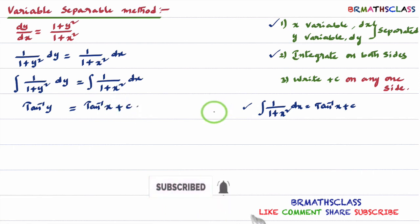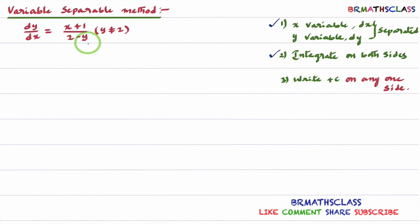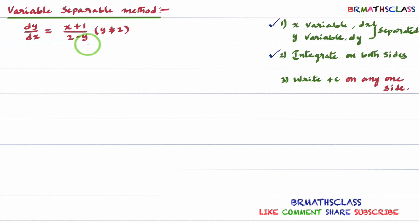Let's understand this more clearly with one more example. Consider dy/dx equal to (x + 1)/(2 − y). Note that if y equals 2, the denominator becomes 0 and the expression is undefined. This is the differential equation to solve.